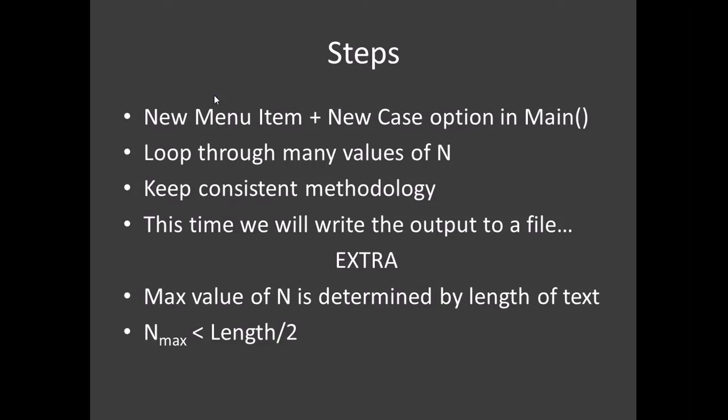Pretty much the same as the Caesar cipher: we are going to create a new menu item, create a new case option in the main, then loop through lots of values of N, keeping consistent methodology to the rest of the case statements. But this time we are going to write to a file, and we are also going to limit the upper value of N. For the Caesar cipher the upper value of N is obviously 26 because you can't go further around the alphabet.